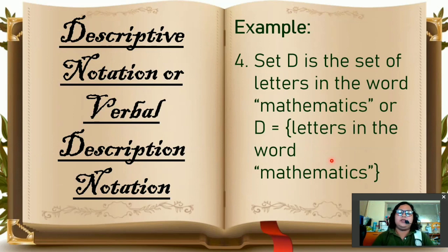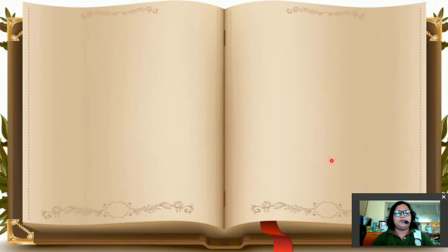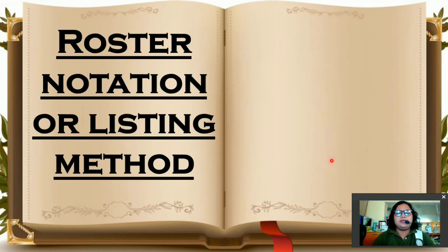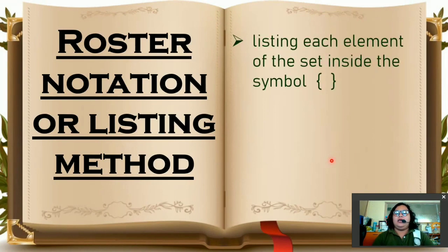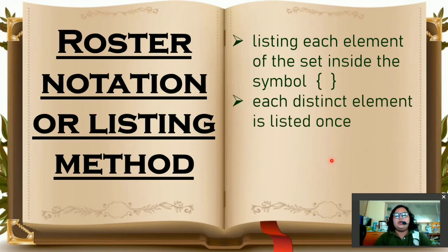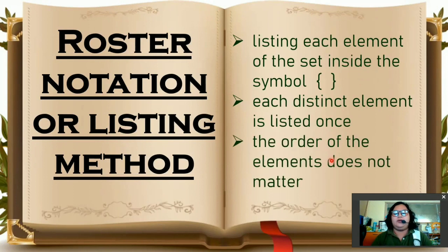Let us now proceed to the next one. Roster notation or listing method. It is the method of listing each element of the set inside the symbol braces. Each distinct element is listed only once. So you don't have to repeat if we have two elements with the same letter. The order of the elements does not matter.